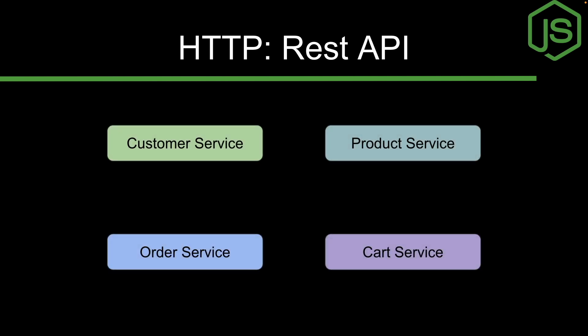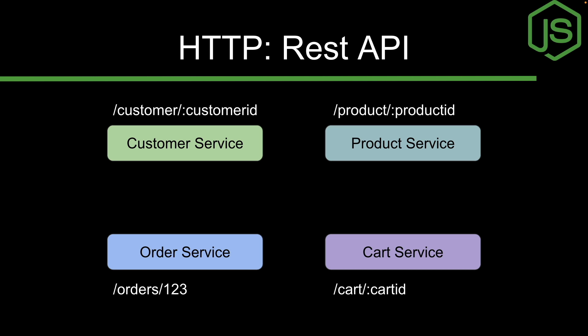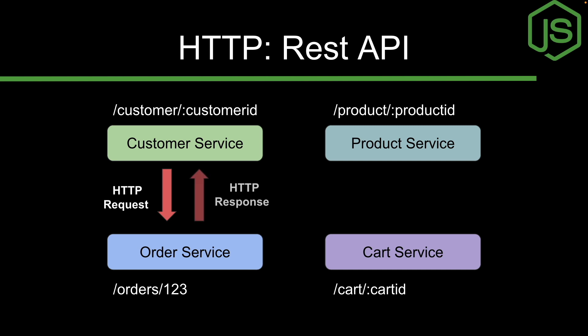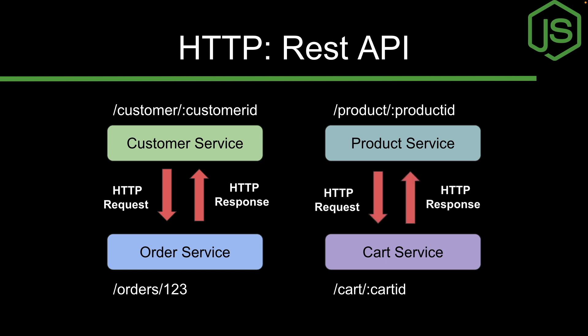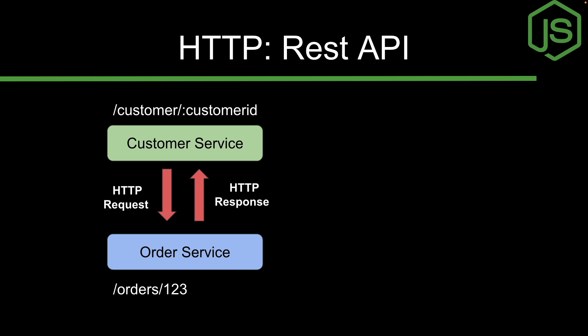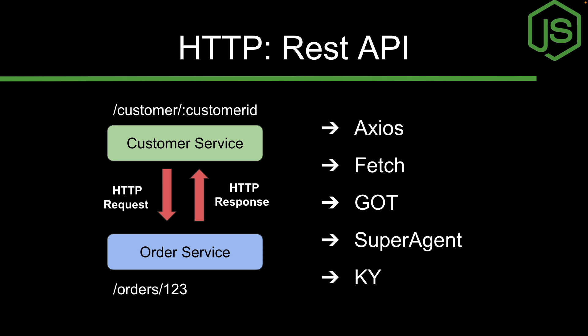In the diagram, we have four microservices — customer service, product service, cart service, and order service — all exposed with REST API endpoints. If the customer service wants to access orders, it sends an HTTP request and the order service responds with an HTTP response. Similarly, product service and cart service can communicate this way. In Node.js, popular HTTP client libraries include axios, fetch, got, superagent, and ky.